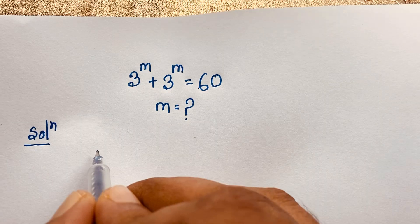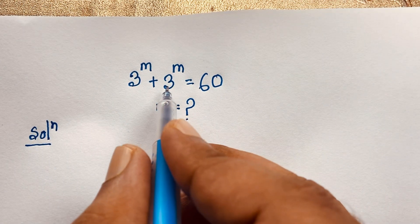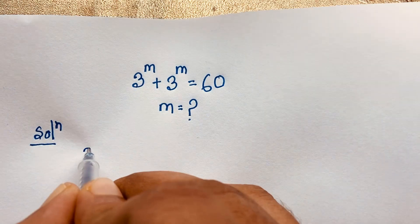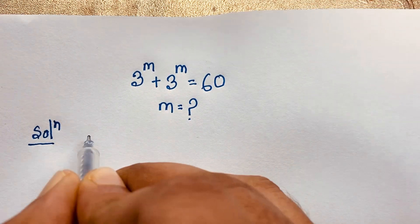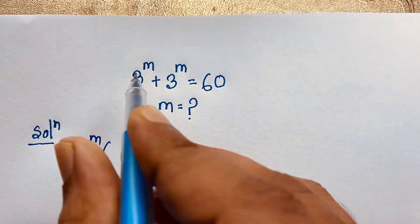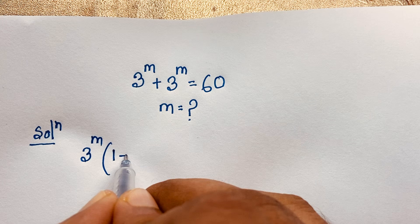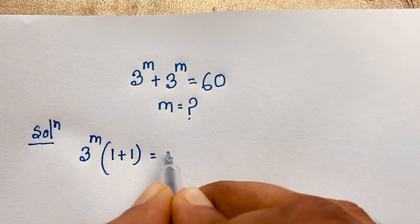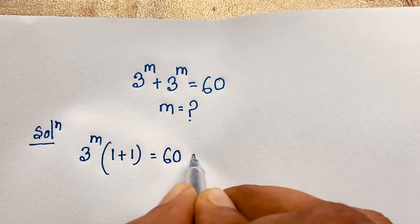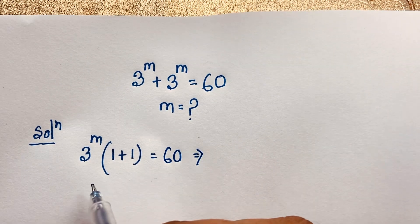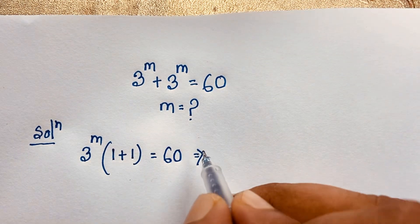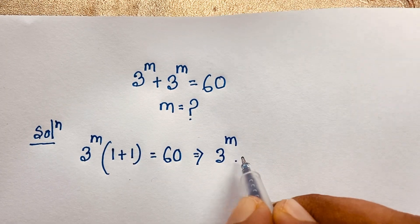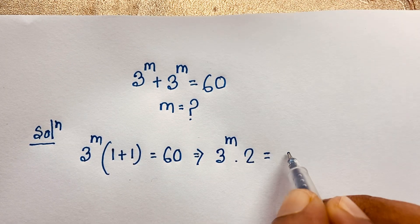Our question is 3 to the power m plus 3 to the power m. First of all, 3 to the power m is common, so I take 3 to the power m as a common factor. This gives us 3 to the power m times (1 plus 1), which equals 60.